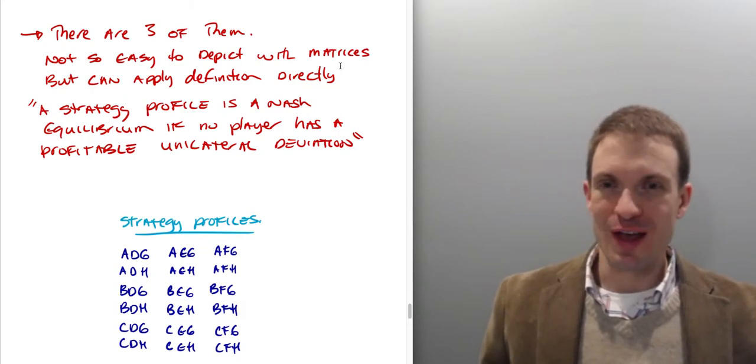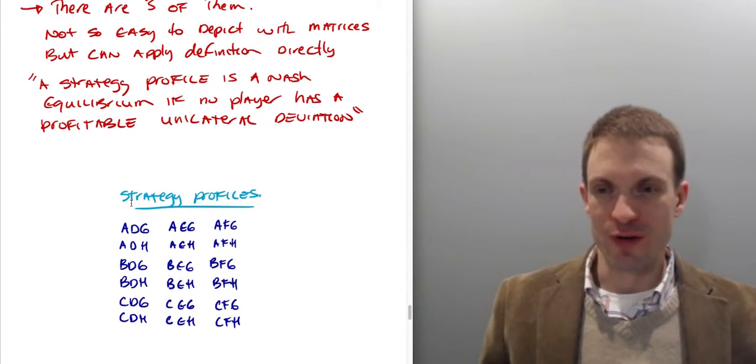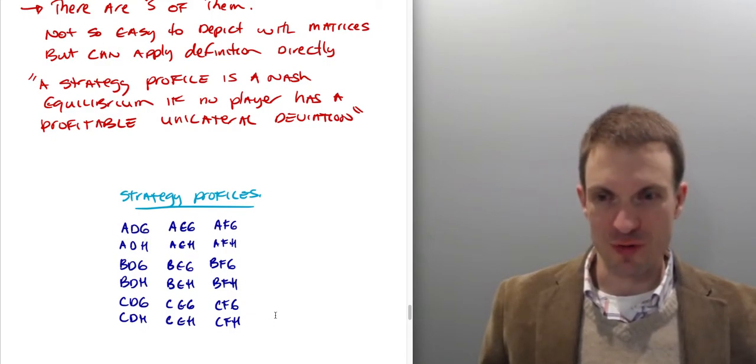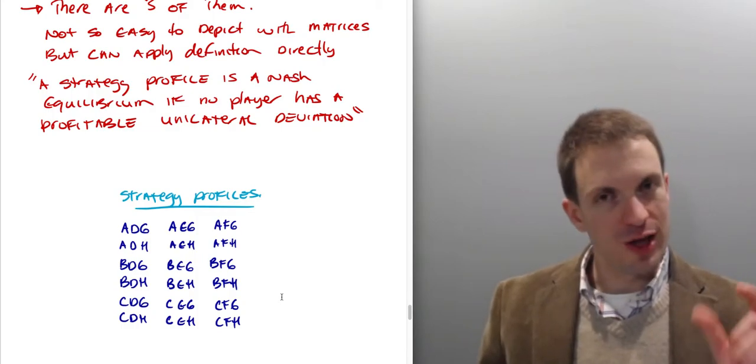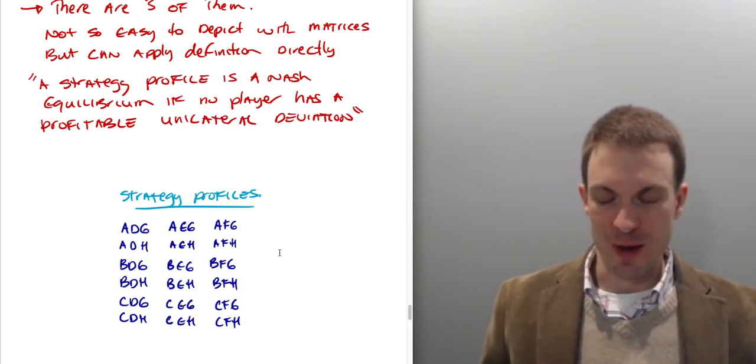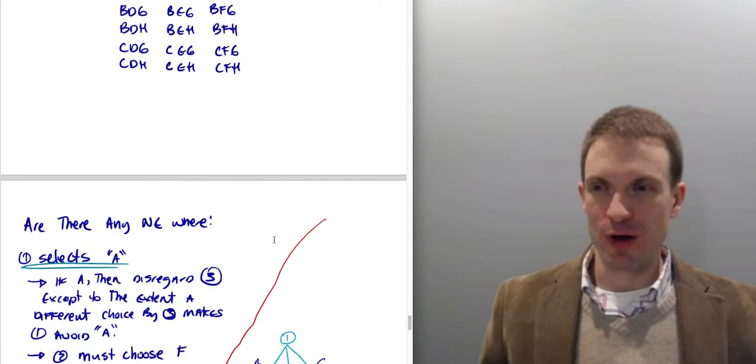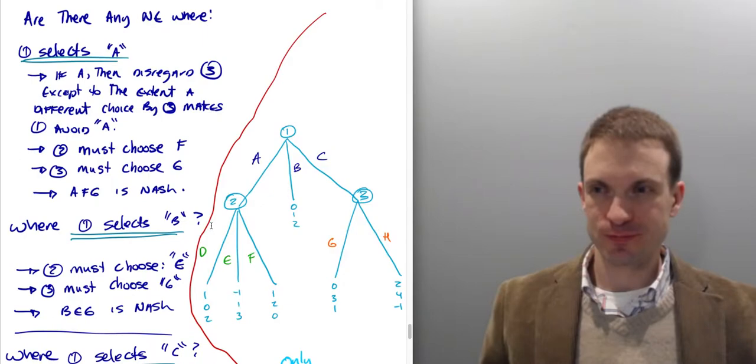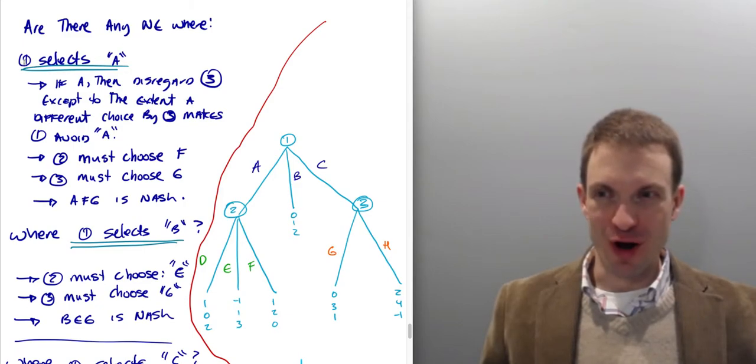Anyway, so what I'm going to do instead to find my Nash Equilibrium is take to heart the definition of a Nash Equilibrium. So a strategy profile is a Nash Equilibrium if no player has a profitable unilateral deviation. So I've enumerated the strategy profiles, ADG, ADH, and so on. So we have a whole bunch of strategy profiles. So I'm just looking at what are, strategy profile takes a strategy from each player. So in this case, it's got to be a triple. If we had two players, it would be just a pair. And if you had n players, it'd be an n tuple. Okay, so the next thing I want to do is I want to see among, among these strategy profiles are any Nash?